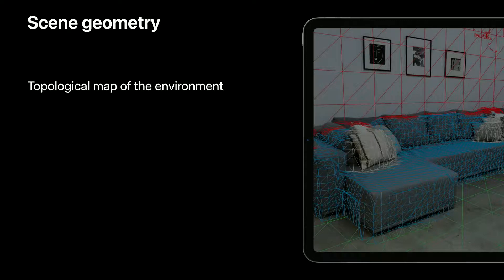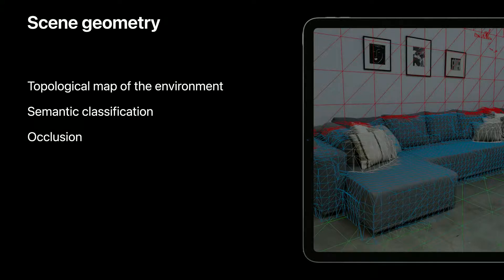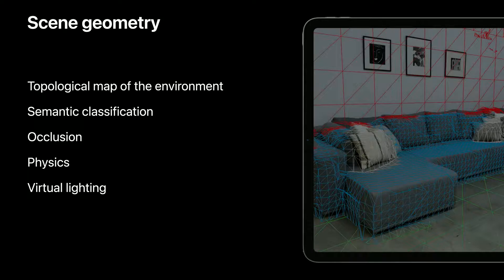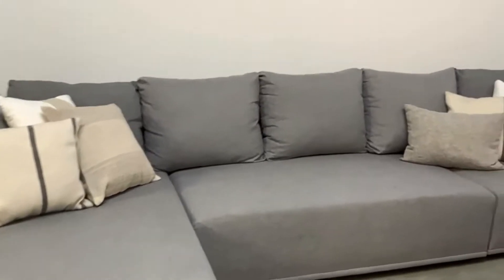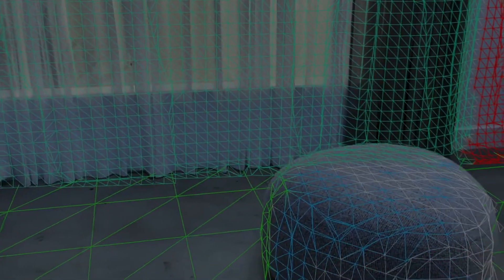The LiDAR scanner is used by the scene geometry API to provide a topological map of the environment. This can be optionally fused with semantic classification, which enables apps to recognize and classify physical objects. Here's a living room — once the scene geometry API is turned on, the entire visible room is meshed, with triangles varying in size to show optimum detail. The color mesh appears when semantic classification is enabled, with each color representing a different classification.